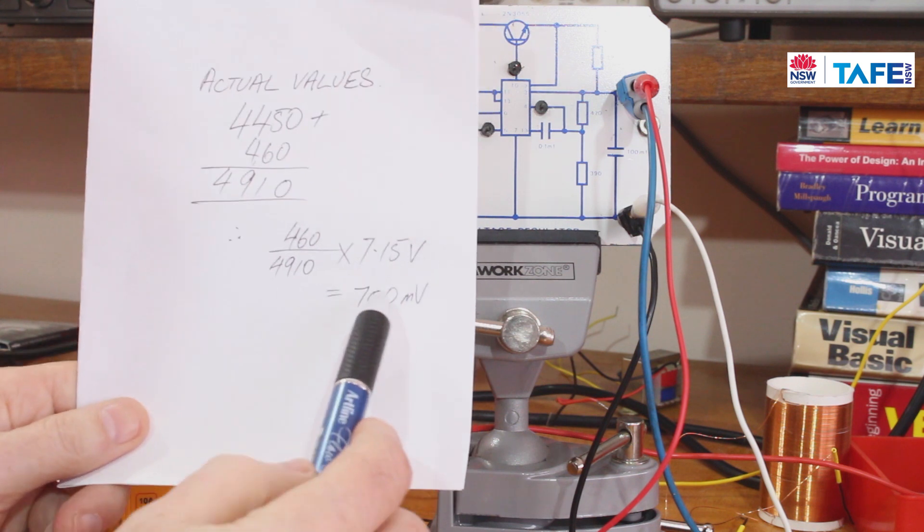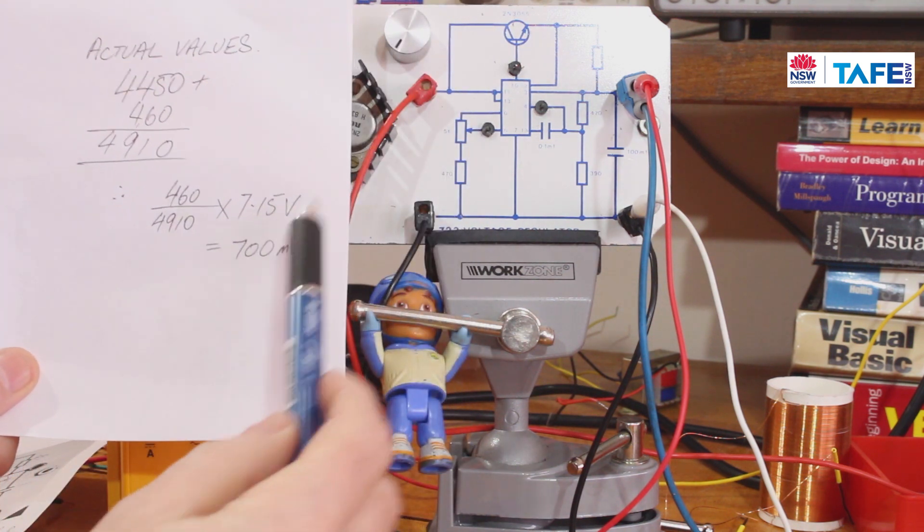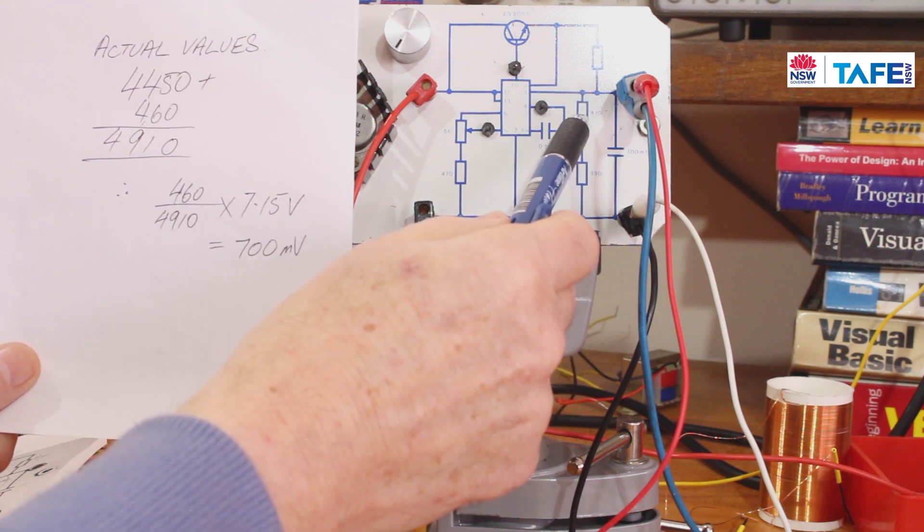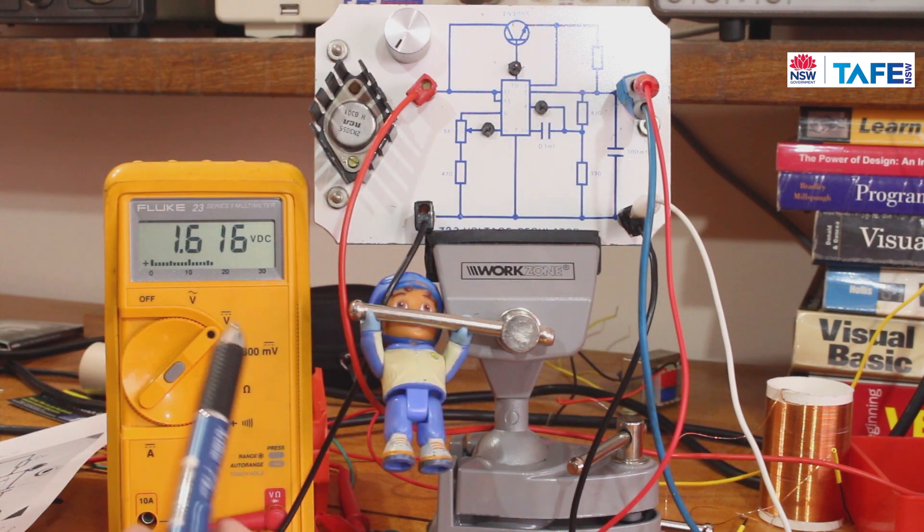Not 1.35 but 1.616. And if you plug the new value in that I had, which was 700 millivolts, so if you were to get the 700 millivolts and divide it by the 390, multiply that current by the 470 and then add 700 millivolts to it, you'll find that you get very close to 1.616 volts.